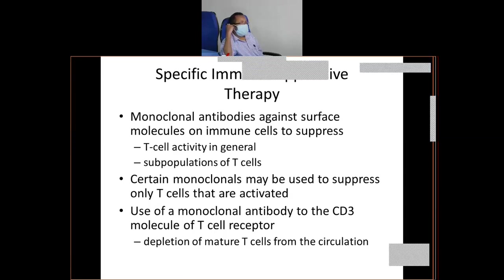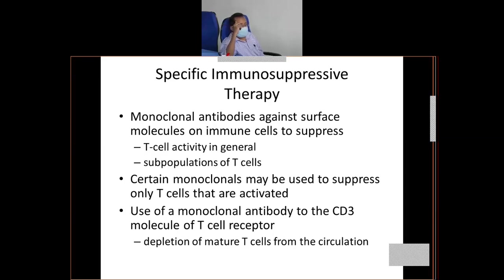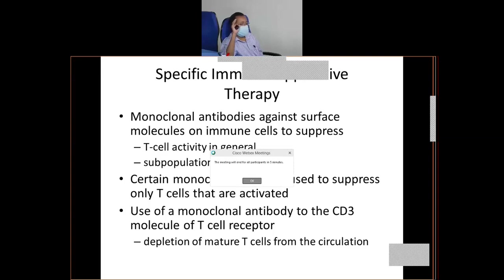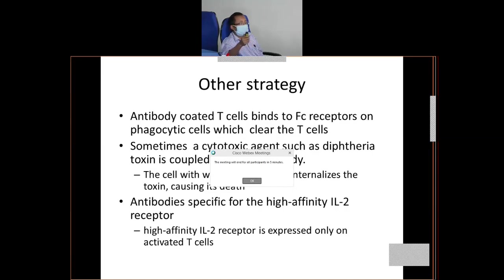There are also specific immunosuppressive therapies. You can use antibodies. As you know, CD3 is expressed by both T lymphocytes — CD4 T lymphocytes and CD8 T lymphocytes. If you use CD3 antibodies, ultimately they will eliminate T lymphocytes from circulation, whereas B lymphocytes and other cells will not be affected. Ultimately it can cause specific immunosuppressive therapy.